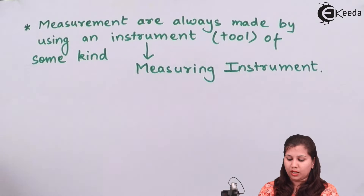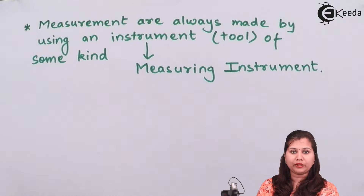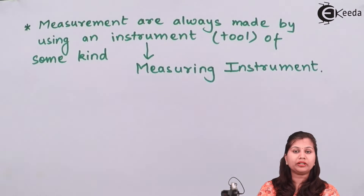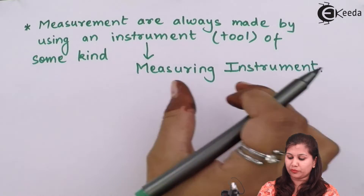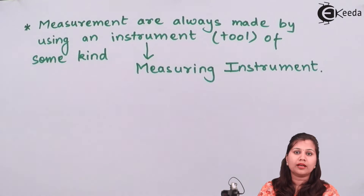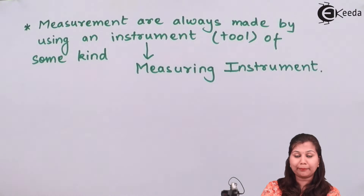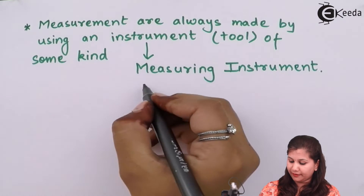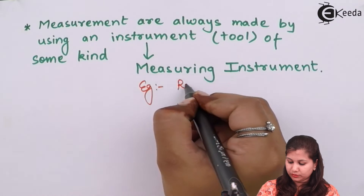Measurement is performed using an instrument, and the instrument used for doing the measurements is called a measuring instrument. Examples of measuring instruments include: